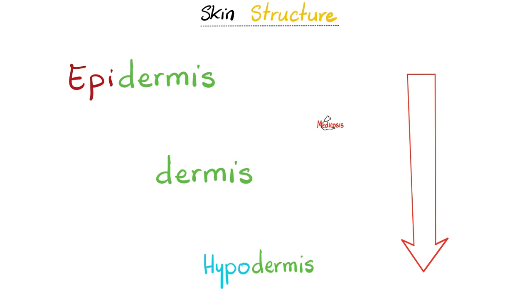From superficial to deep: on top we have the epidermis, above the dermis, which is followed by the dermis — and 'derma' means skin. Hypodermis is under the skin. Hypodermis is the same as superficial fascia, because we have two types of fascia: superficial fascia, which is more superficial, and deep fascia, which is deeper.